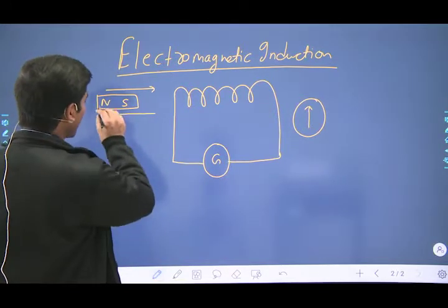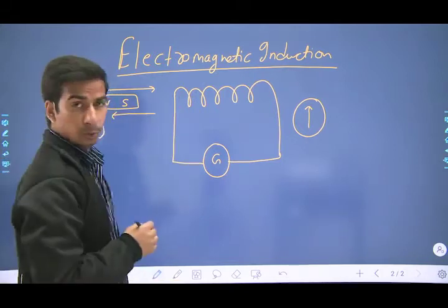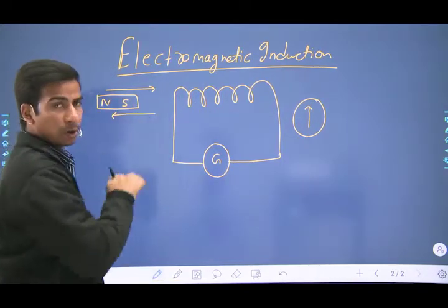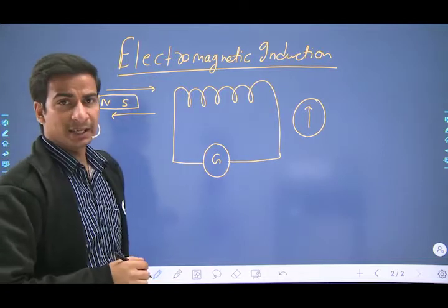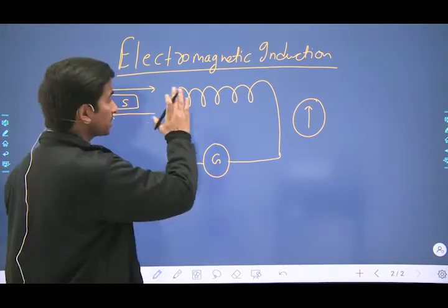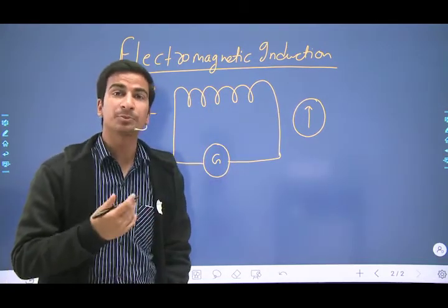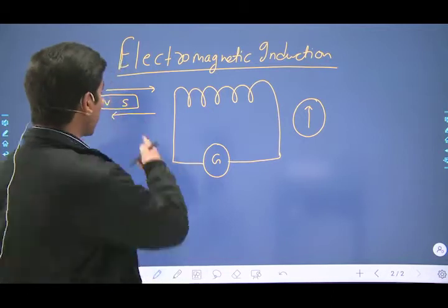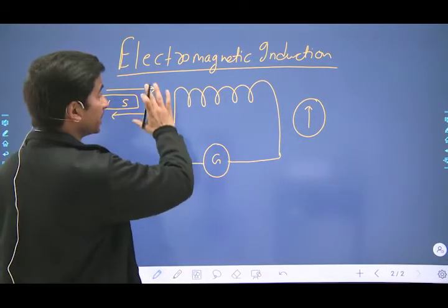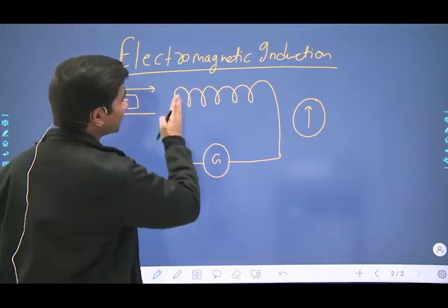Suppose you have a bar magnet and you bring the south pole close to the coil. As you bring the south pole near the coil, the magnetic field lines through the coil will increase — the magnetic field which the coil is experiencing will increase because you are bringing the magnet near to the coil.